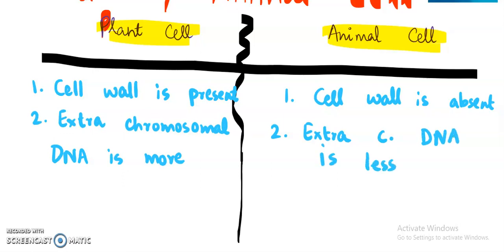Why it would be less? Because here in the case of plant cell mitochondria will have the extra chromosomal DNA. Along with that chloroplast will also have the DNA. That's why they are semi-autonomous. But here only mitochondria will be there. That's why the extra chromosomal DNA will be less.